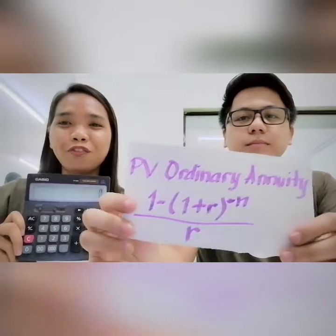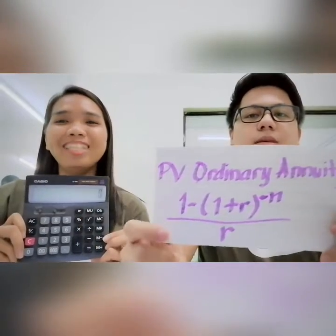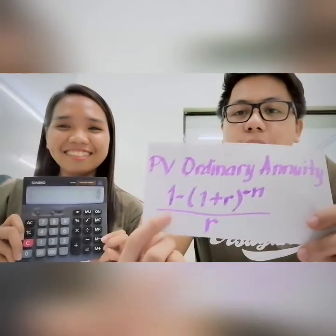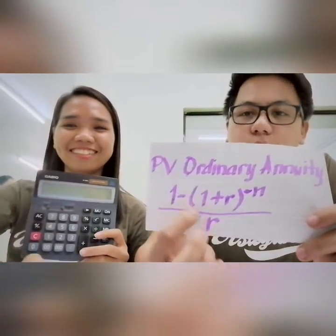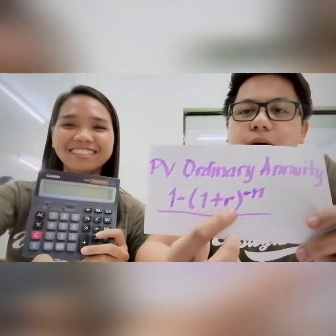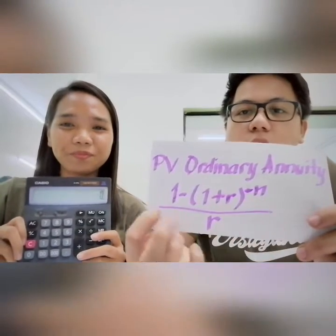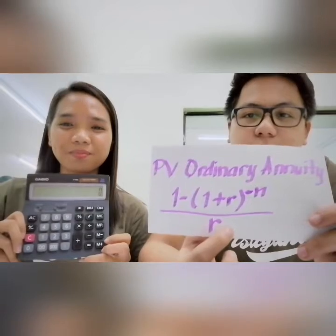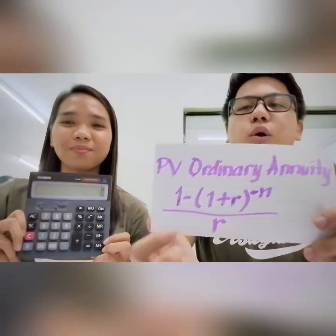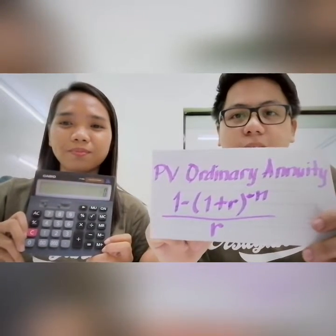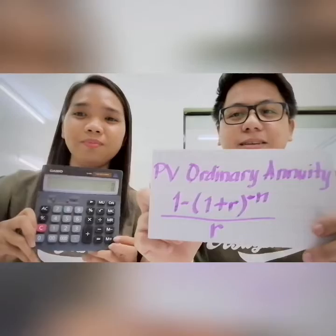Next off, let's compute for the present value of ordinary annuity. Its formula is 1 minus 1 plus the rate to the power of n, all over the rate. Again, we are compounding with a 10% rate for 10 years.